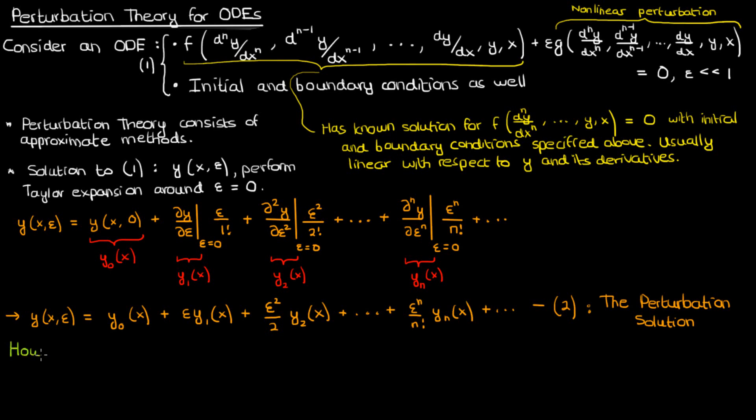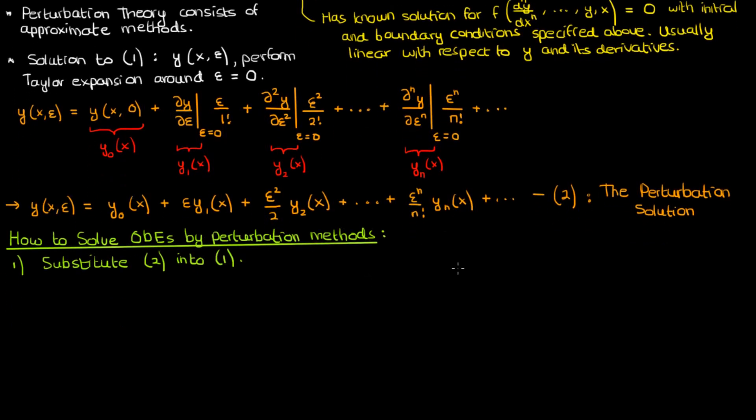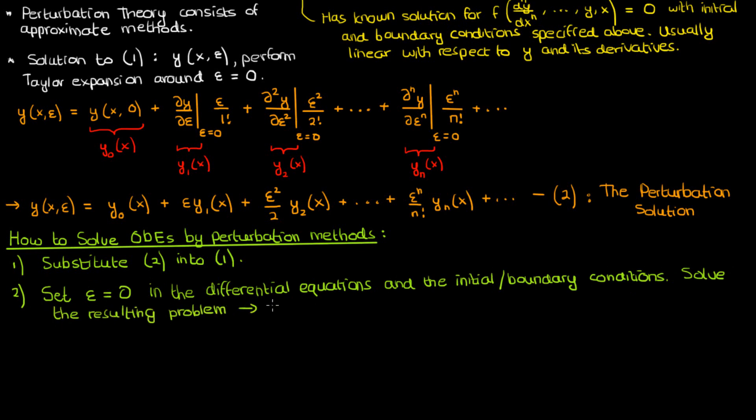Now that we've got the foundation, we can break down solving ODEs by perturbation methods into four simple steps. The first step is to substitute the perturbation solution into your differential equation and the boundary slash initial conditions. You don't actually have to write all the terms in the substitution, just be ready to use that substitution for the later steps. The second step is to set epsilon equals 0 in the differential equation and the initial slash boundary conditions you start with. In other words, equation 1 up above. Once you set epsilon equals 0, solve the ODE, and you'll end up with the solution, y0.